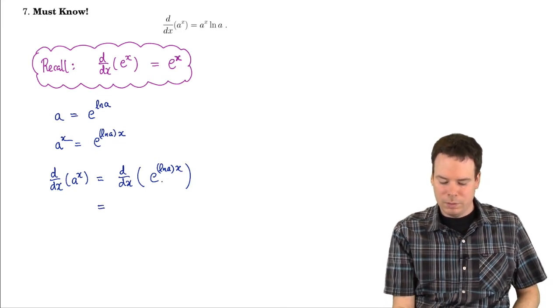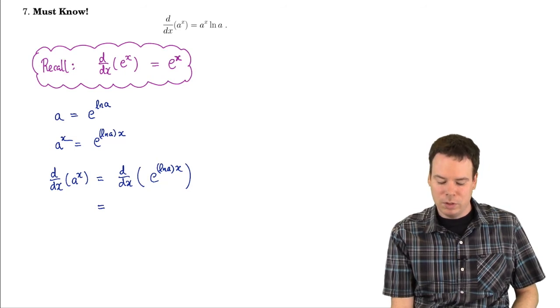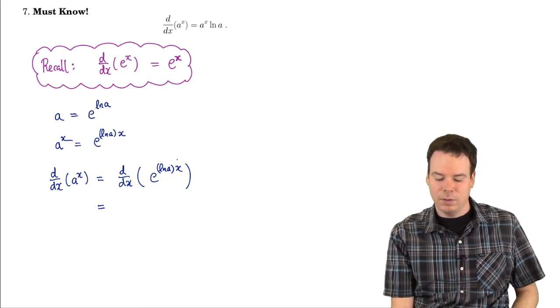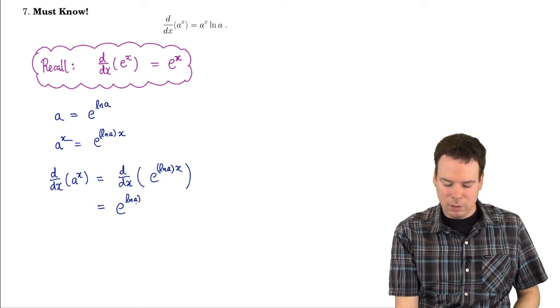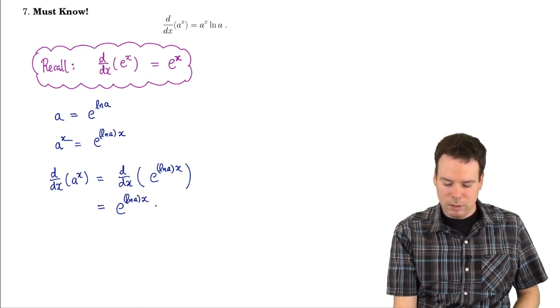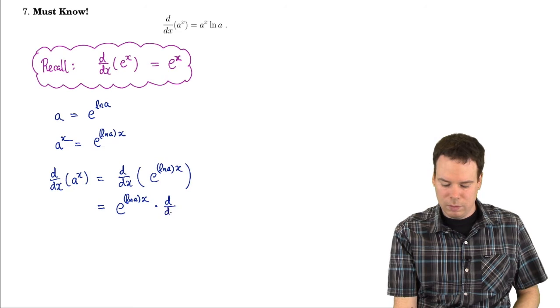The derivative of this exponential function, well this is actually a composition, it's the exponential function with this linear function. So the derivative is going to be e to the inside function times the derivative of the inside function. The inside function is ln of a times x.